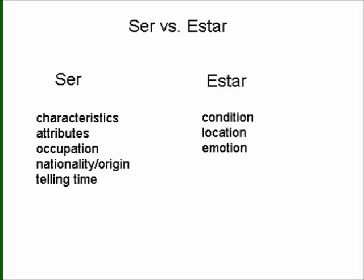Now there are different ways to keep these things straight. For me the easiest way is to just memorize this list for estar, because it's a shorter list. I can keep those three things in mind: condition, location, emotion. And I know that if it's condition, location, or emotion, I'm going to use estar. If it's not one of those three things, then chances are I'm going to use ser instead.